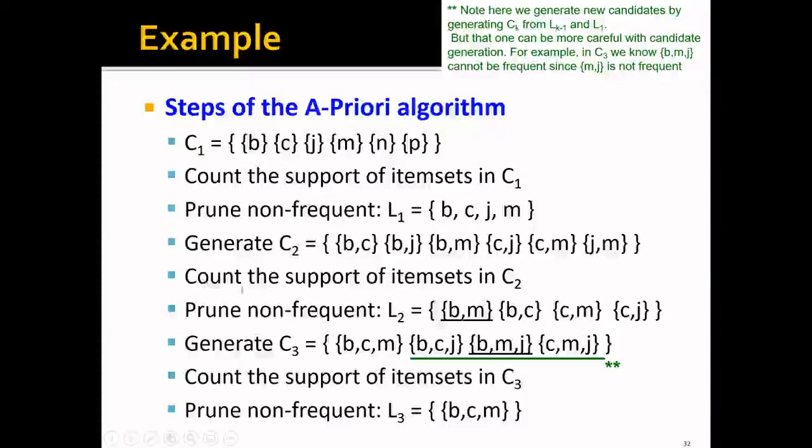And then we will count the support of each item set in C_2. And we will again prune the non-frequent ones and get L_2. We can see that right now at L_2, we have only four frequent item pairs left.